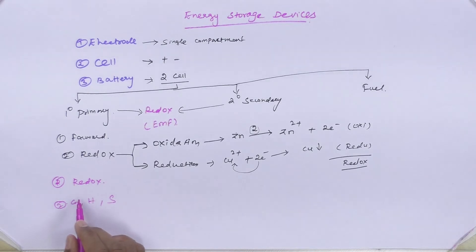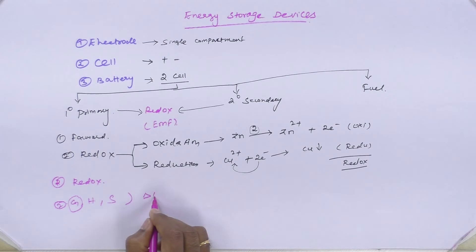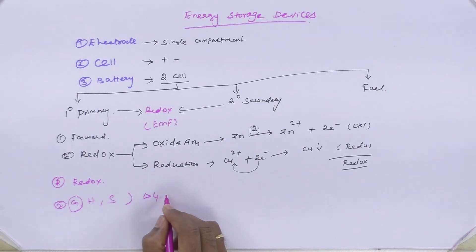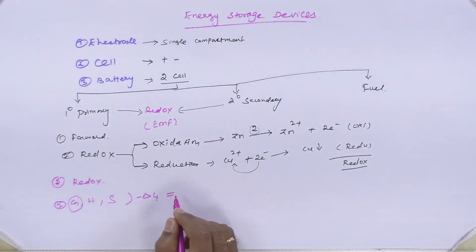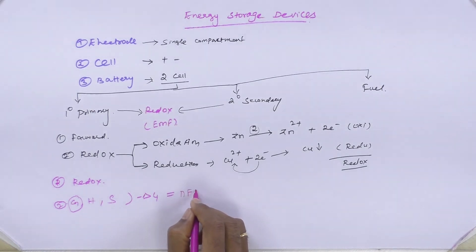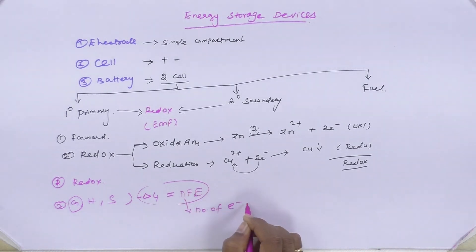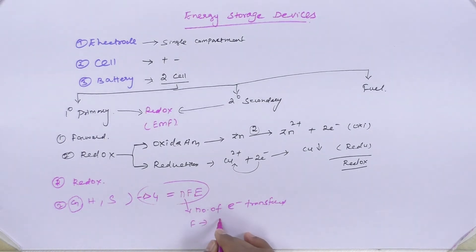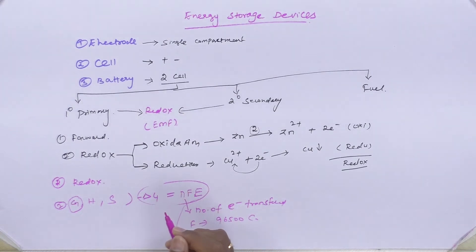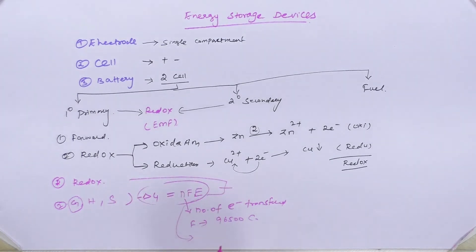When you look at the electrochemical system, the change in Gibbs free energy is represented by ΔG. The negative sign indicates that there is a decrease in the free energy of the system, which leads to the production of EMF. Therefore, −ΔG = NFE. Here N is the number of electrons transferred during the redox reaction, F is Faraday — where 1 Faraday equals 96,500 coulombs — and E is the electrical potential. The decrease in free energy of the system due to chemical reactions leads to the production of EMF. These two are the reasons responsible for EMF production in electrochemical and electrolytic cells.